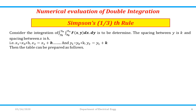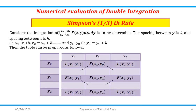The next method is Simpson's one-third rule. The same statement applies: consider ∫(y0 to yn) ∫(x0 to xn) f(x,y) dx dy to be determined. The spacing between y is k and the spacing between x is h. We again prepare the same table. The same table is used for Simpson's one-third rule, but there is a difference in the formula.